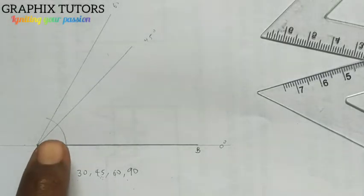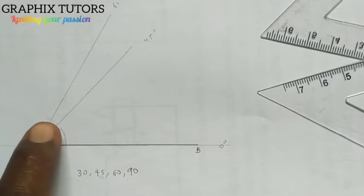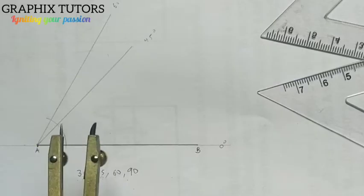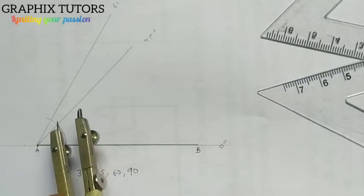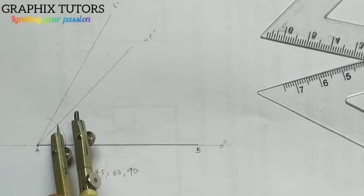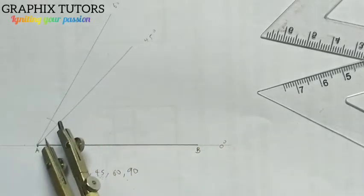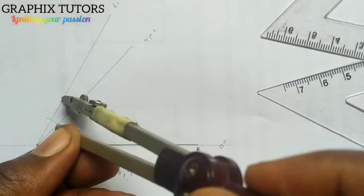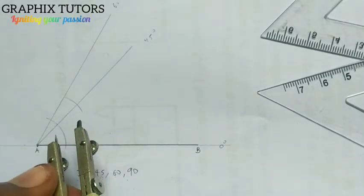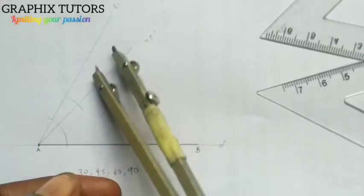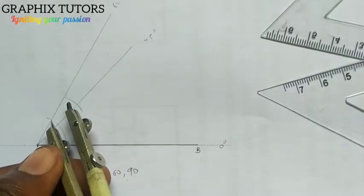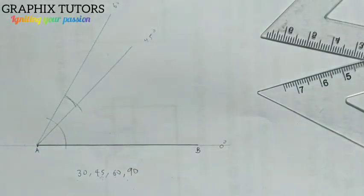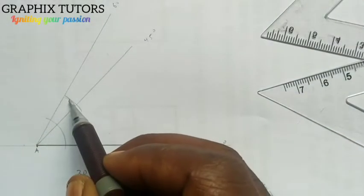Now at where it bisects these two points, place your compass at one of those points on the line of 45 degrees and strike an arc. Then take it on the line of 60 where it bisects, place at that point and strike another arc. So what do you notice? They are intersecting at this point.